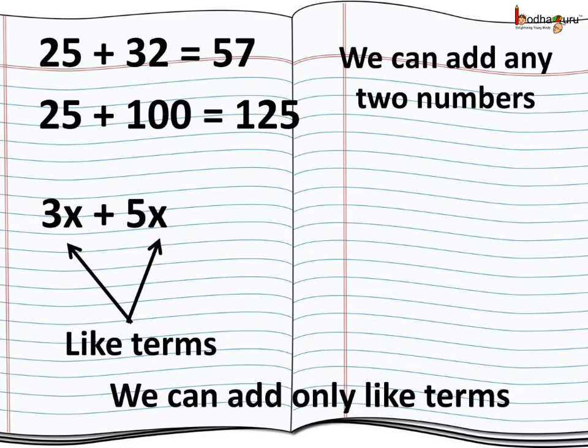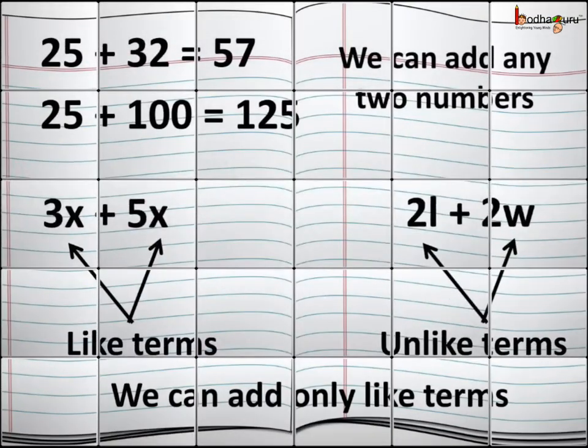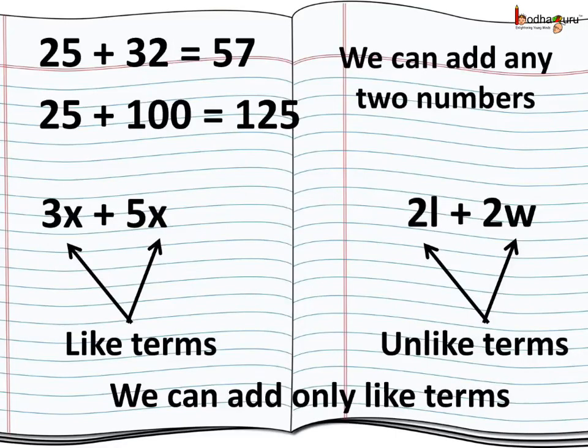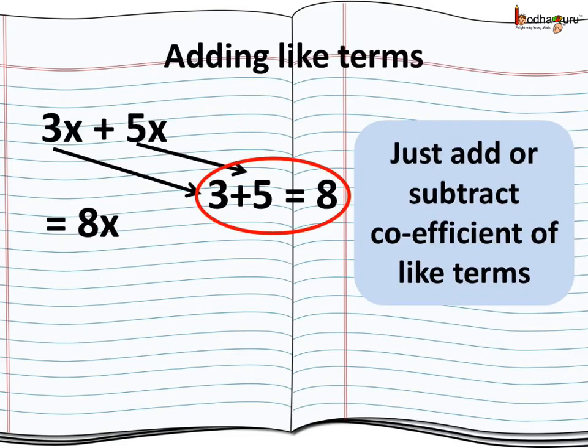For example, we can add 3x and 5x as both have the same variable factor x. But we cannot add 2L and 2W directly as they are unlike terms. And when we add the two like terms, we only look at the coefficient.